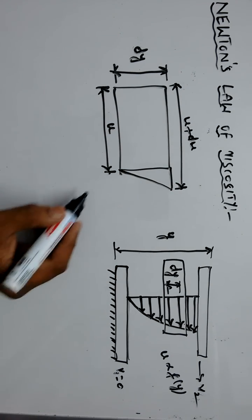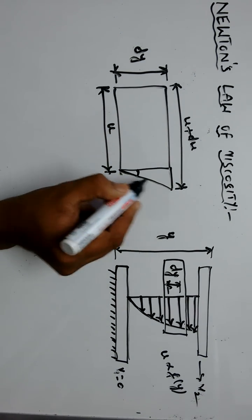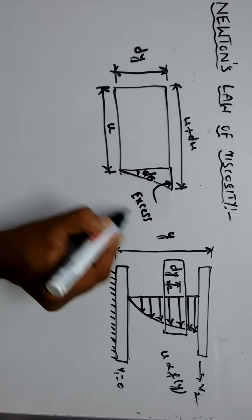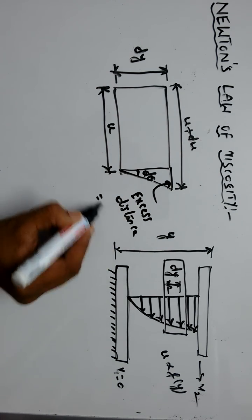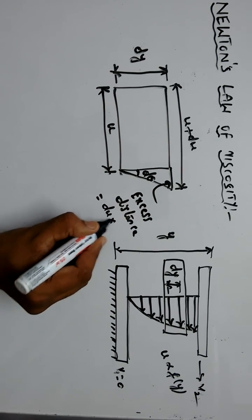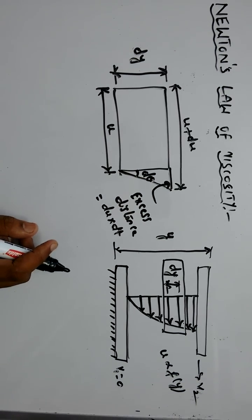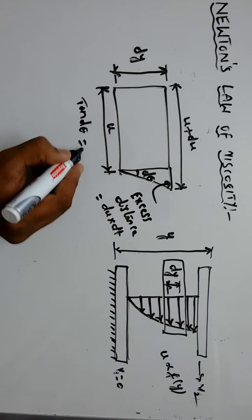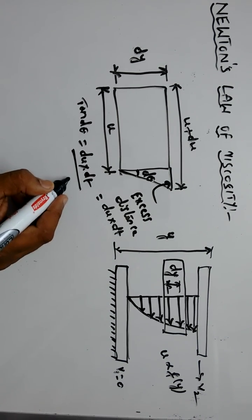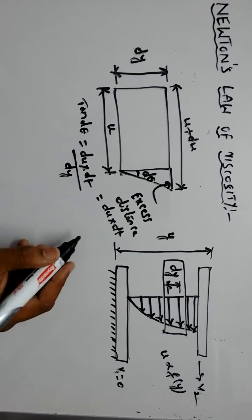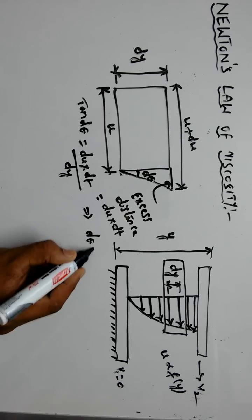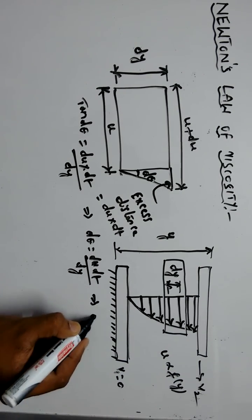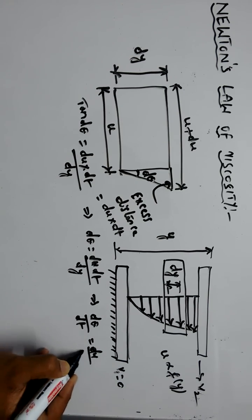The angle made by the fluid element with the vertical axis is d theta. From this triangle you can write tan d theta equals du dt divided by dy. As d theta is very small, d theta equals du dt by dy. So d theta by dt equals du by dy.